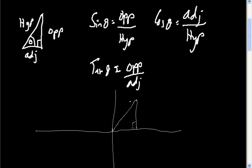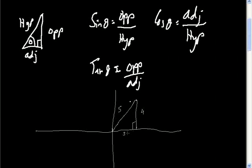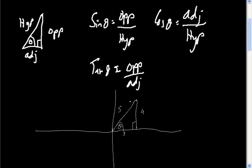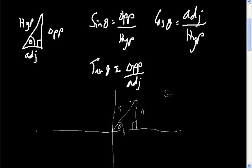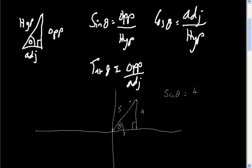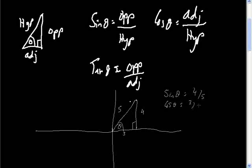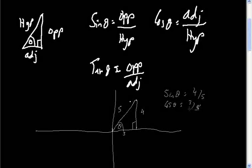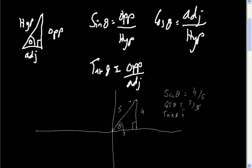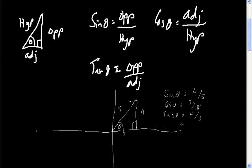Now let me draw this same right-angle triangle and put some values to it. I'll call this side 4, this side 3, and this side 5 — that's indeed the right-angle triangle; if you square each side and apply Pythagoras' rule it all matches up. Let's work out the sine, tan, and cos ratios for this angle. Sine theta is opposite over hypotenuse, which is 4 over 5. Cos theta is adjacent over hypotenuse, which is 3 over 5. And tan theta is opposite over adjacent, so that's 4 over 3.